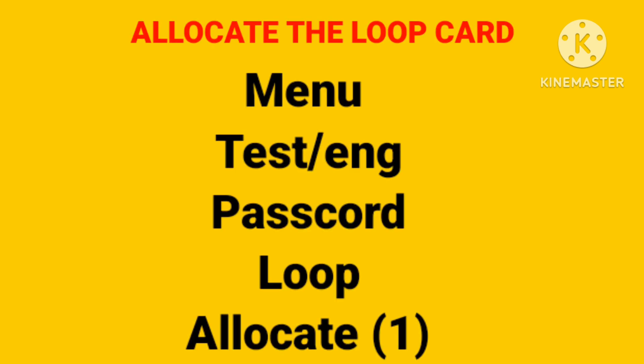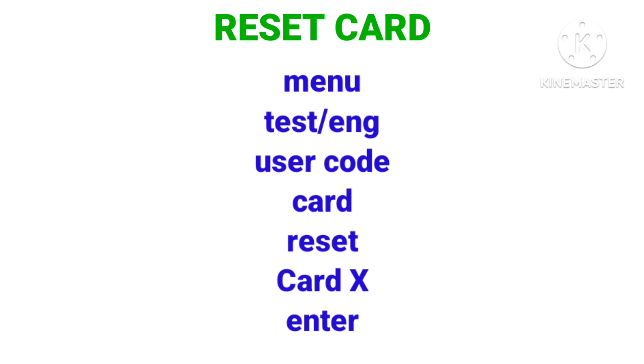To allocate the loop card, go to Menu, then Testing, then enter the password, then select Loop Card, then locate Loop 1. This is how you do the look. For a reset, go to Menu, then Testing, then enter the user code, then Card, then Enter. You can also do a backup — I have videos on this.